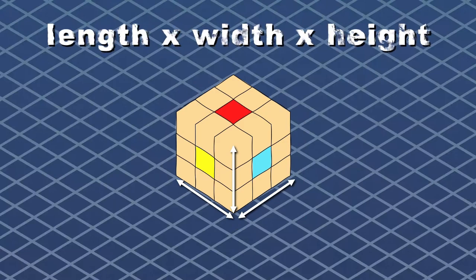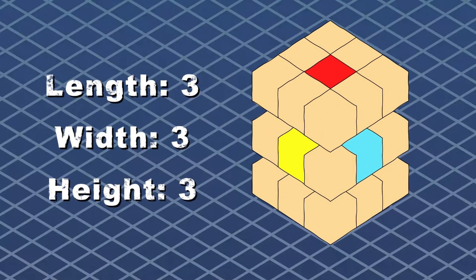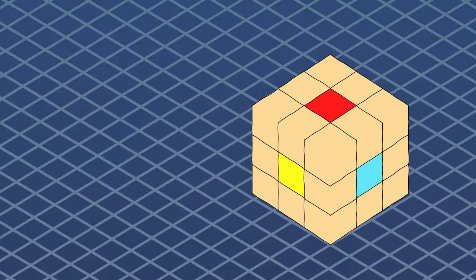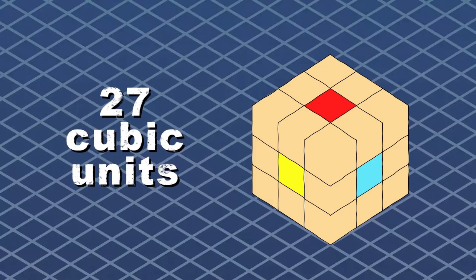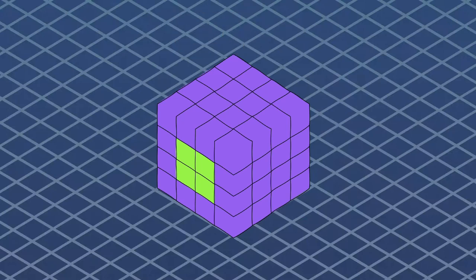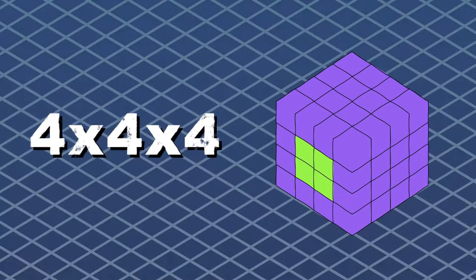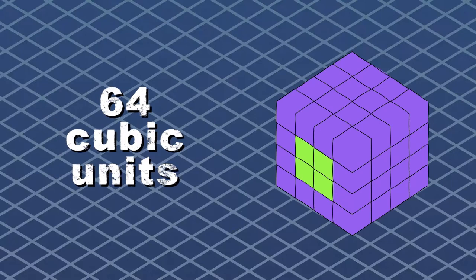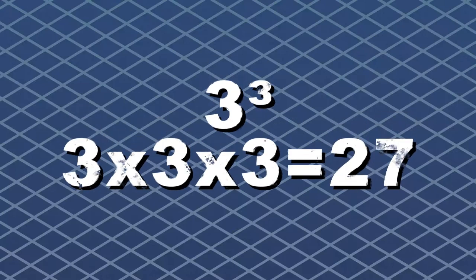The volume of the cube is length times width times height. In this case they're all the same. This cube's a lot bigger than before because the length, width, and height are equal to four. When we multiply 4 three times, the volume in cubic units will be 64. Every time you raise a number to the power of 3, a cube number is what it'll be.